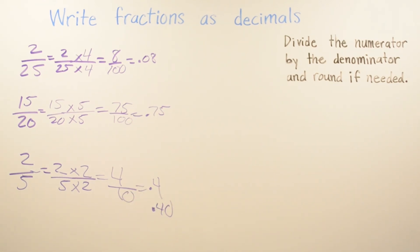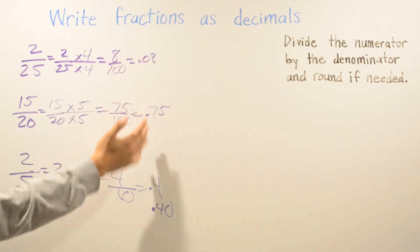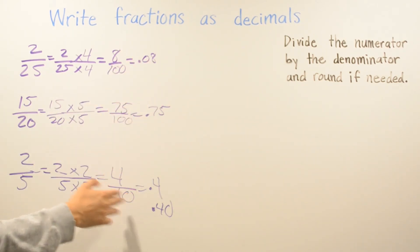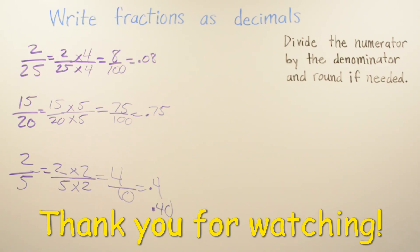Hopefully you already tried these and checked your answers. If you used multiplication or division, you should have gotten 0.08, 0.75, and 0.4. If you didn't get those answers, go back and retry. And if you have friends or family who need help writing fractions as decimals, share this video with them. Thanks for watching!